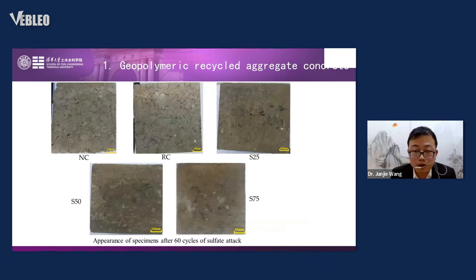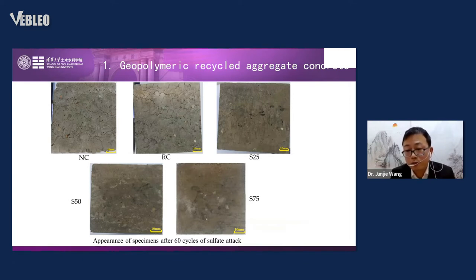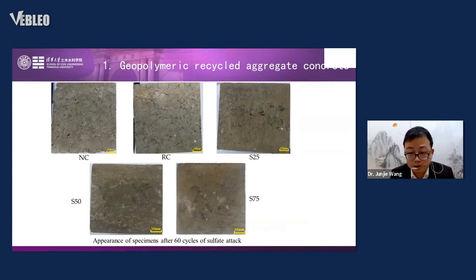This shows the appearance of normal concrete, recycled aggregate concrete, and the three geopolymer recycled aggregate concretes after 60 cycles of sulfate attack. We can clearly see that all three geopolymer recycled aggregate concretes had much better performance than the normal concrete and normal recycled aggregate concrete.